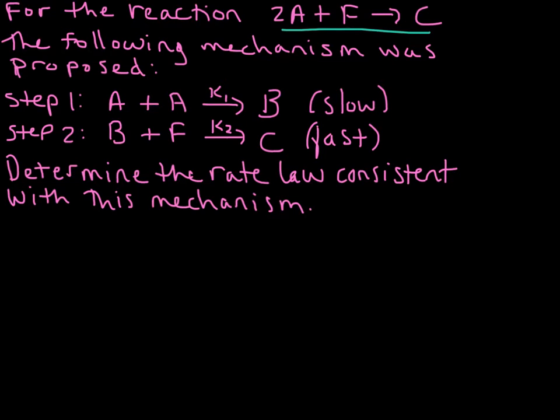The proposed mechanism has A reacting with A with rate constant K1 going to B, and that's a slow step. In step 2 we have B plus F with rate constant K2 going to C as our final product.